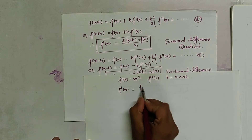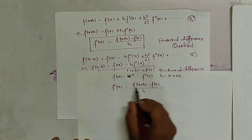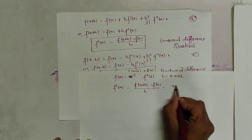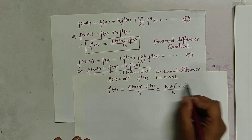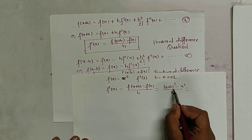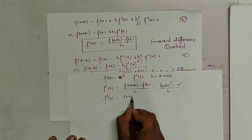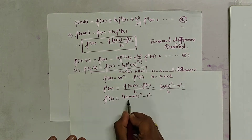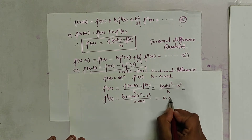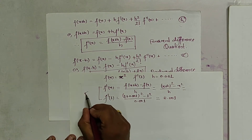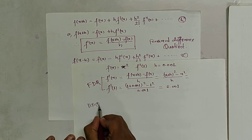Let us first use the forward difference quotient. f'(x) equals [f(x+h) minus f(x)] divided by h. Since f(x) equals x², f(x+h) equals (x+h)². So f'(1) equals [(1+0.001)² minus 1²] divided by 0.001, which gives the value 2.001.